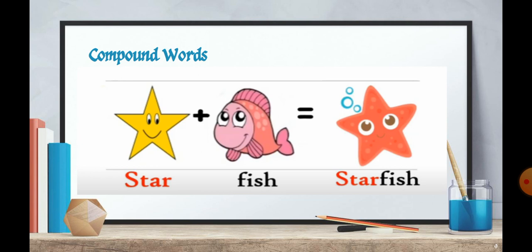Yes, a big one star. You like to get star on each of your tasks. So here is one word star, the other word is fish. When we join these two words, we will get a sea animal. That is starfish.